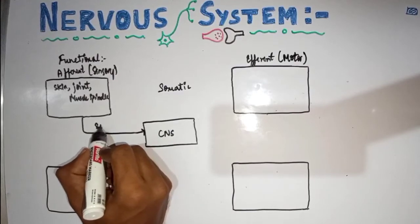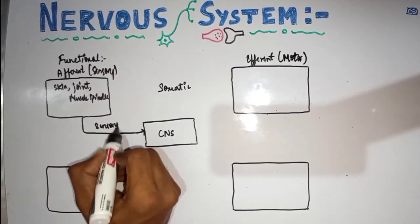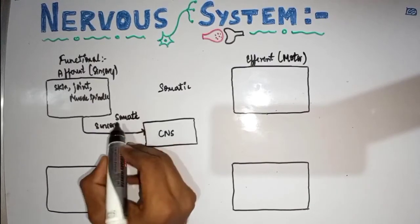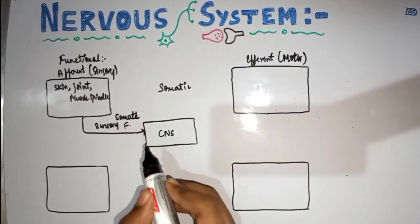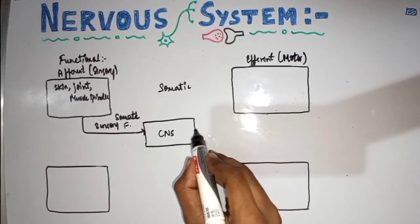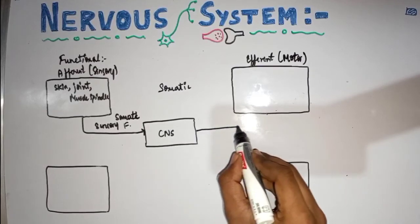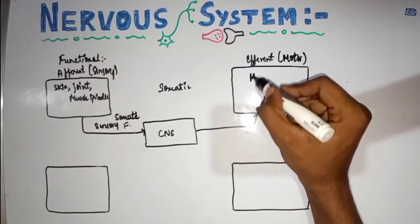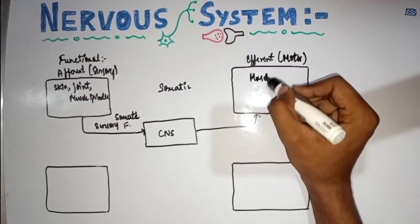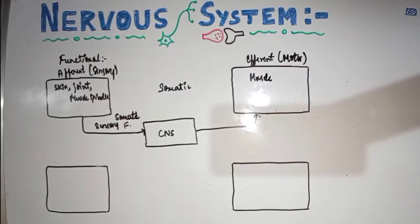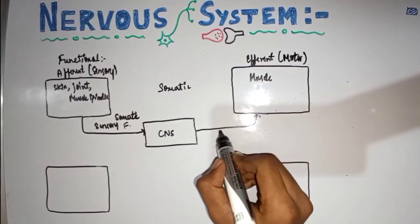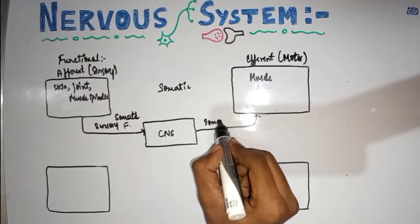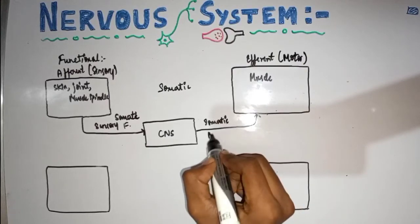From the CNS, signals travel back via somatic motor fibers to reach the effectors, which are somatic organs like muscle cells.